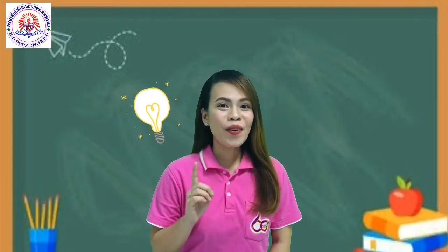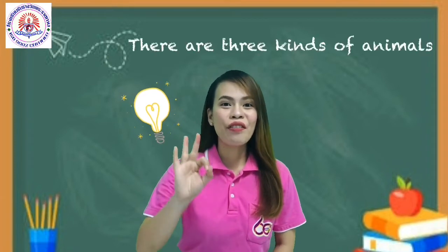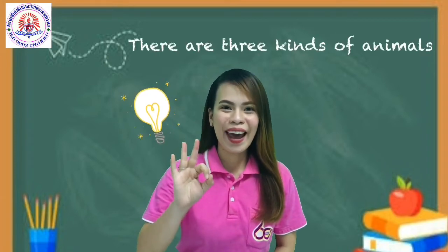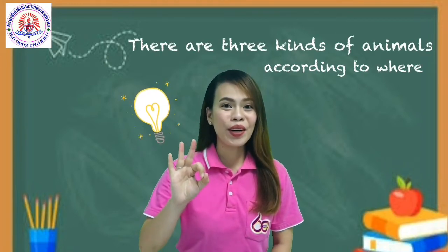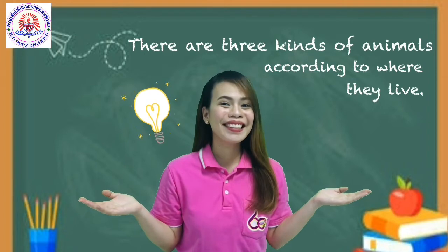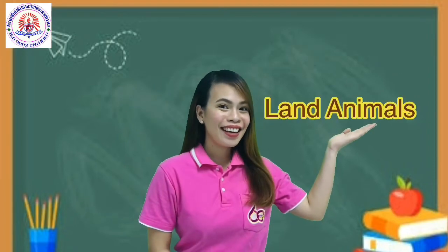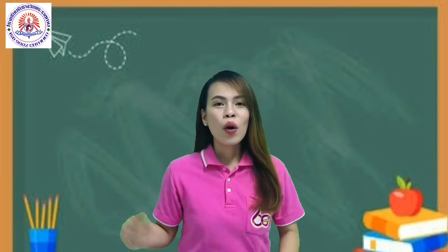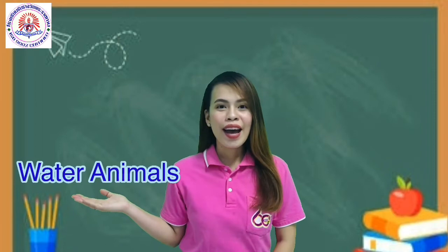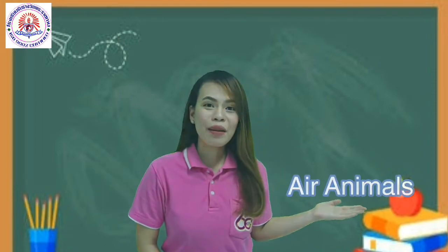Did you know that there are three kinds of animals according to where they live? These are land, water, and air animals.